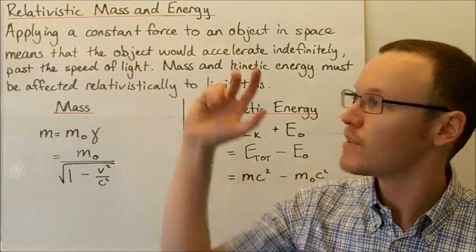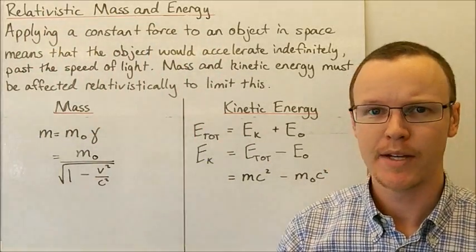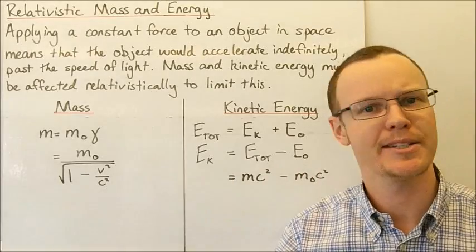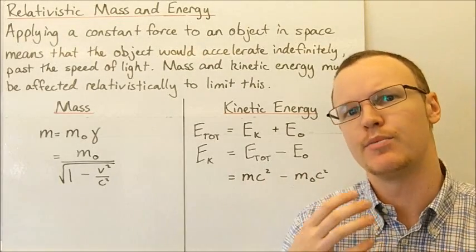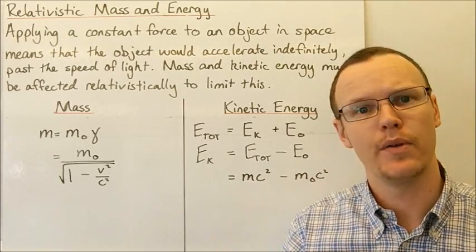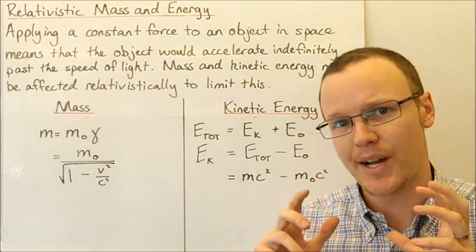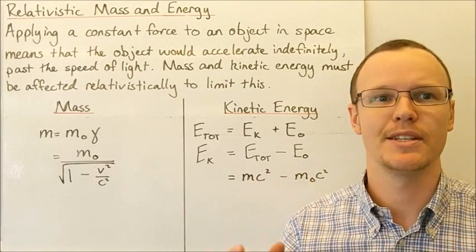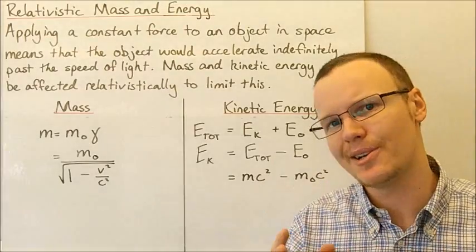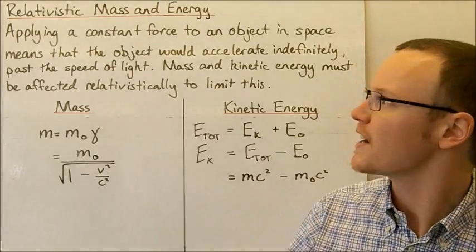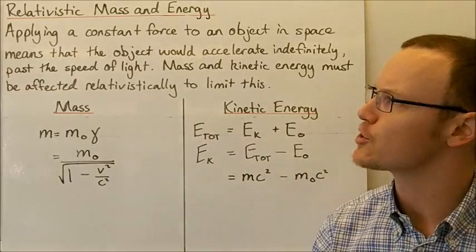Today we're going to be looking at relativistic mass and energy. Mass and energy are the last things we're going to be looking at with respect to different properties affected by special relativity. High velocities, velocities close to the speed of light, do affect these two properties: mass and kinetic energy.